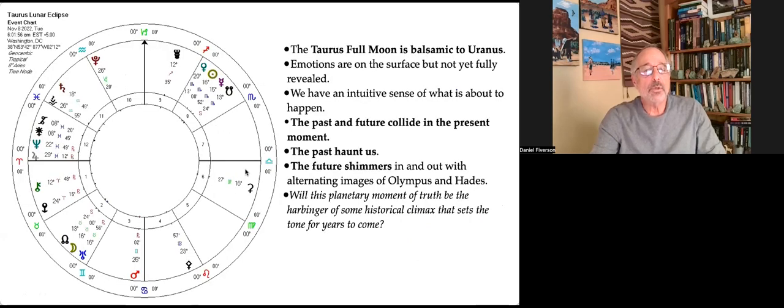The Taurus full moon is balsamic to Uranus. Emotions are on the surface, but not yet fully revealed. We have an intuitive sense of what is about to happen. The past and future collide in the present moment. The past haunts us. The future shimmers in and out with alternating images of Olympus and Hades. Will this planetary moment of truth be the harbinger of some historic climax that sets the tone for years to come? That's the question that I ask.